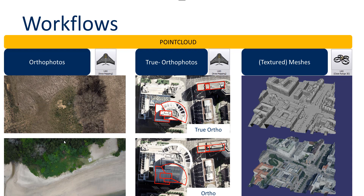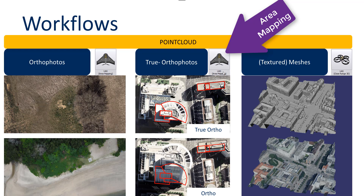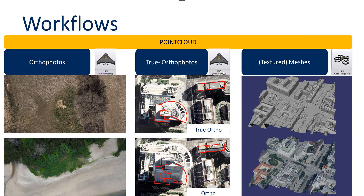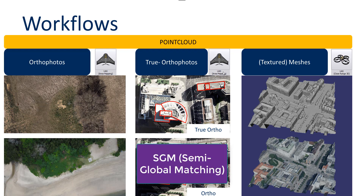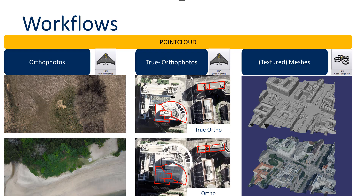The second workflow we want to explain and show is the true orthophoto workflow, which also runs through the area mapping project type. We will introduce the semi-global matching for two-and-a-half D data. We will show how the true orthophoto is processed in a very high automatic way and also how the point clouds that are generated are pre-filtered for this process. It will allow us to create very good-looking buildings where the rooftops have sharp edges, which is typically one of the major criteria for true orthophotos.